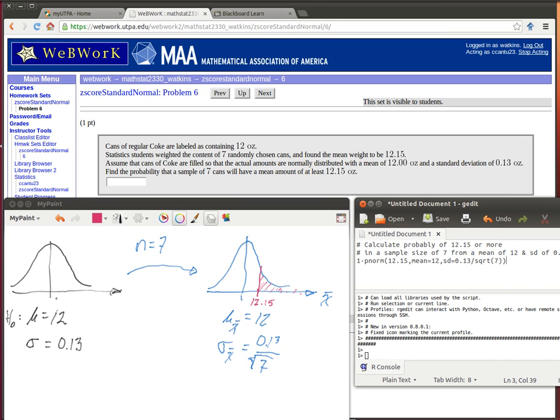It'll have the same mean as the population had. So the mean of the sample means will be the same as the original population. And the standard deviation will be the standard deviation of the original population divided by the square root of the sample size.